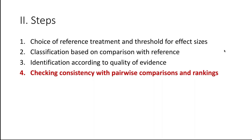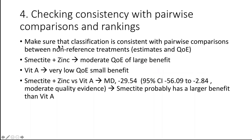Before finalizing, we check the consistency with pairwise comparisons and rankings, ensuring classification is consistent with pairwise comparisons between non-reference treatments — both for the estimate and the quality of evidence. For instance, smectite and zinc have moderate quality of evidence for a large benefit, while Vitamin A has very low quality for a small benefit. Looking at the actual pairwise comparison of smectite and zinc versus Vitamin A, they indeed provide a large effect compared with Vitamin A at moderate quality of evidence, confirming the indirect comparison conclusion.